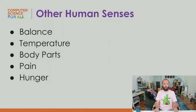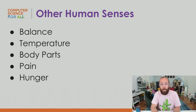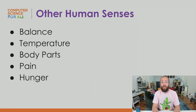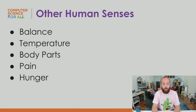Humans have other senses too. We have a sense of balance — we can tell if we're about to fall over, and some people have better balance than others, which can be trained. We also have a sense of temperature; you can't tell the exact temperature when you touch something, but you can tell if it's hot, cold, very hot, or very cold.